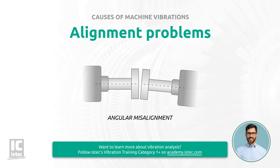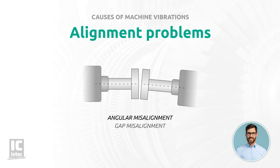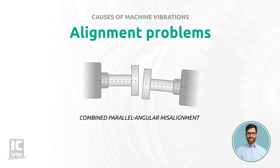Second, angular misalignment occurs when the shafts meet at a point but are not parallel. This can be both on the horizontal and the vertical axis. Angular misalignment is also known as gap misalignment.